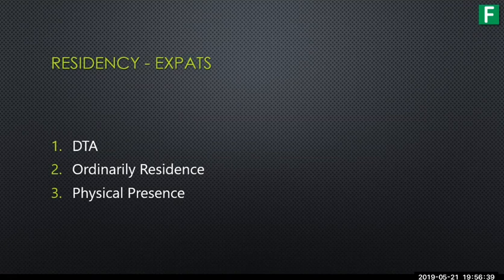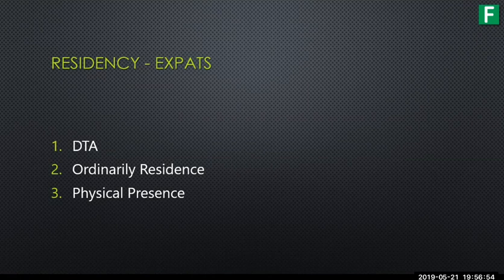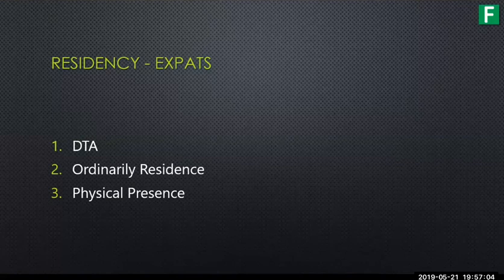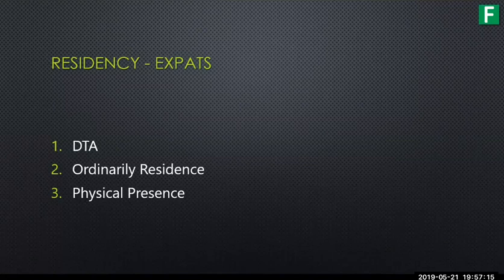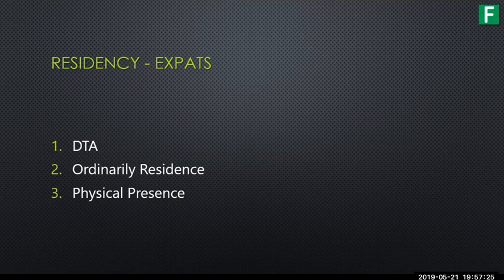Responding to a question from the chat: the 10 million rand is per person per calendar year for taking money out of the country, on top of the 1 million rand discretionary allowance. The 1 million discretionary allowance is like a travel allowance — you don't need to apply or get a tax clearance for it. For amounts above that, you can take up to 10 million per person per calendar year.